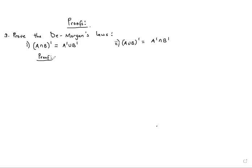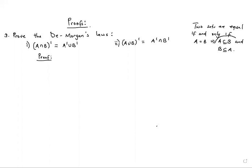For the proof of the first law, one thing we should know is that we say two sets are equal if and only if A equals B, which implies A is a subset of B and B is a subset of A. So to show inclusion, we need the whole set B to be in A and vice versa — if this happens, then we say the two sets are equal.